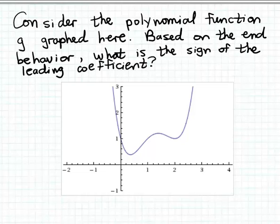Okay, in this example, we're shown the graph of a polynomial function, and by looking at the end behavior of the polynomial function, we want to determine the sign of the leading coefficient of the polynomial function, even though we're not given the formula for the polynomial function.